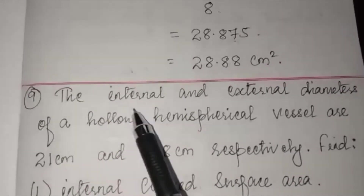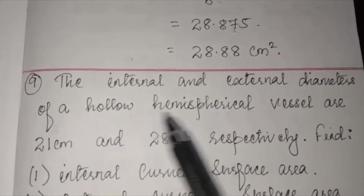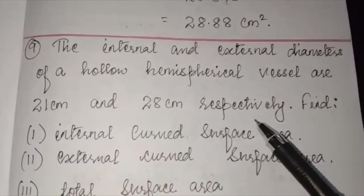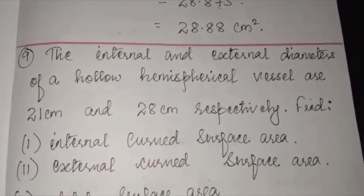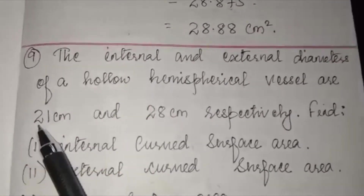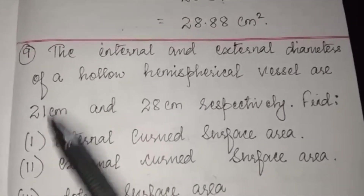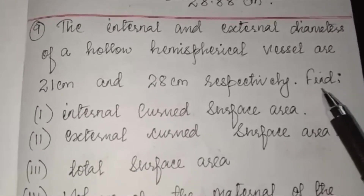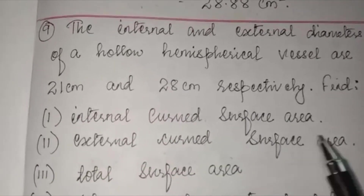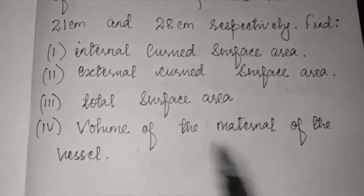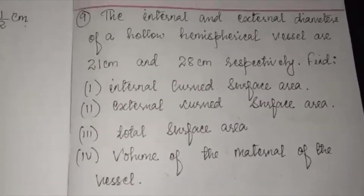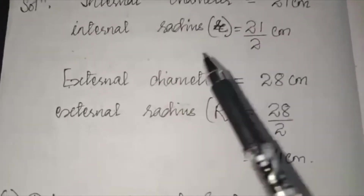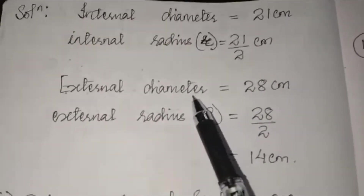Question number 9: the internal and external diameters of a hollow hemispherical vessel are 21 cm and 28 cm respectively. The internal radius is 21/2 cm and the external radius is 28/2 = 14 cm. We need to find the internal curved surface area, external curved surface area, total surface area, and volume of the material of the vessel.